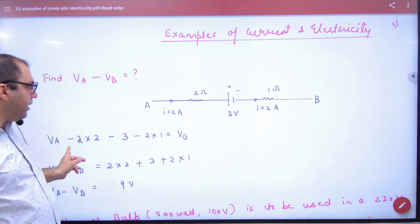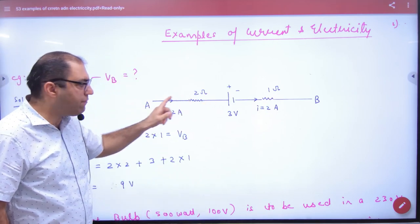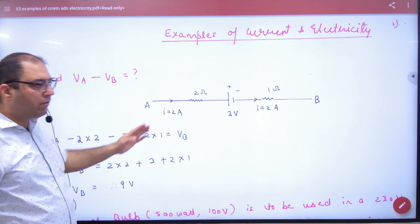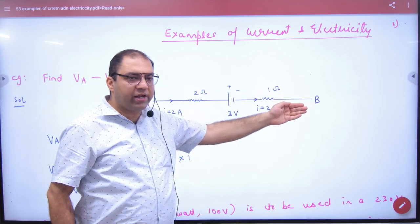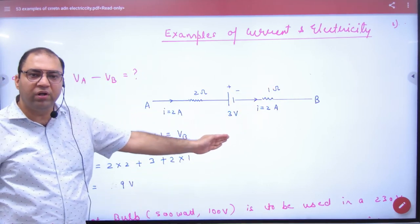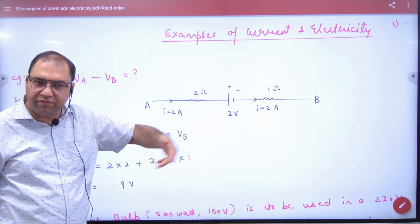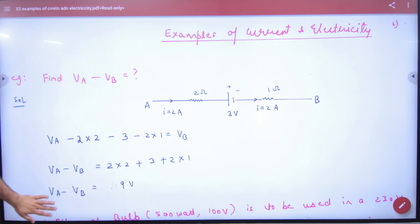So this VA is going in the direction of the current. Minus I into R. Plus and minus, so minus 3. Then in the direction of the current, minus 1 into 2 equal to VB. We have to take VA minus VB value. Okay?